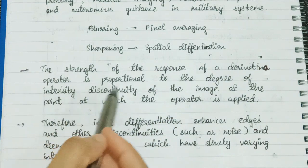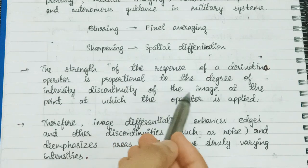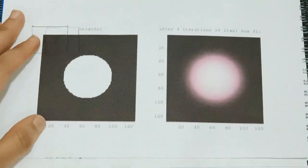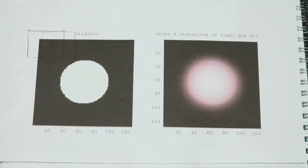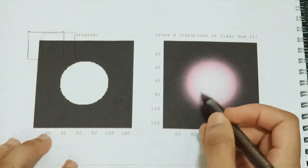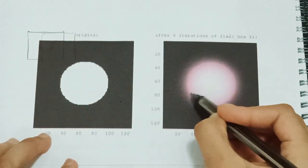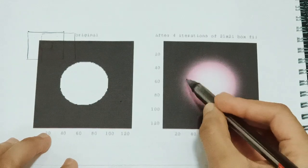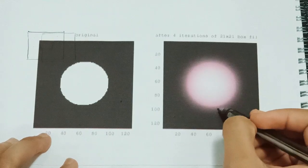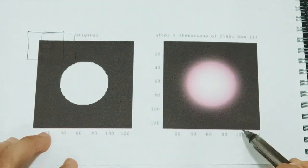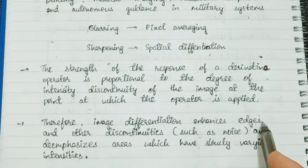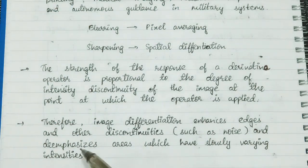The strength of the response of a derivative operator is proportional to the degree of intensity discontinuity of the image at the point at which the operator is applied. Towards the edges there is a rapid change in intensity, so the derivative operator would be higher there. Therefore, image differentiation enhances edges and other discontinuities such as noise, and de-emphasizes areas with slowly varying intensities.